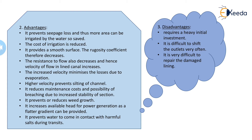Canal lining prevents or reduces weed growth. It increases the available head for power generation, as a flatter gradient can be provided. Though a flatter gradient is used for power generation, by storing water at a higher elevation and using the increased velocity in the canal, we can use a reaction turbine to generate electricity. It also prevents water from coming in contact with harmful soluble salts and minerals during conveyance, thus protecting the water quality before it is supplied to the agricultural field.